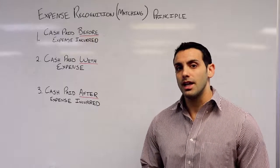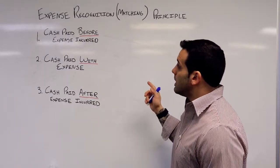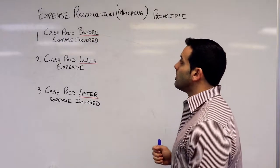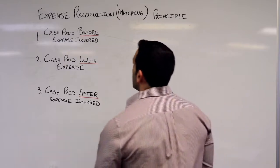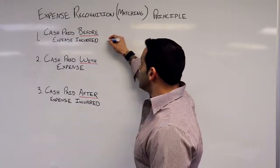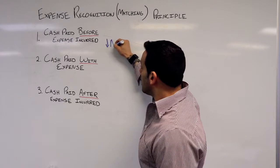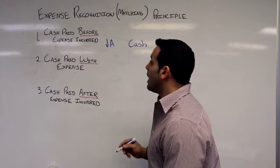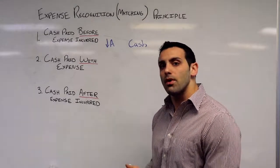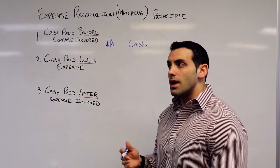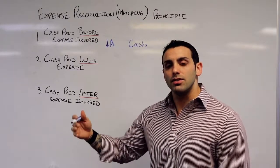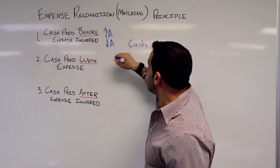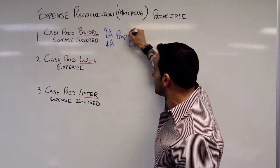There's three situations that can exist. The first is cash is paid before an expense is incurred. In this example, we pay the cash, so we are decreasing an asset. This is going to be our credit. Since we paid before the expense was incurred, it's almost as if our vendors owe us. So this is also increasing an asset, and we're going to debit prepaid expenses.